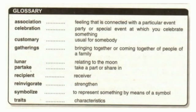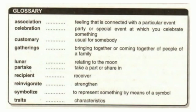Glossary meanings: association — feelings connected with a particular event; celebration — jashan, a special event at which you celebrate something; customary — mamool, riwaj, usual for somebody; gatherings — bringing together or coming together of people or a family; lunar — kumri, relating to the moon; recipient — receiver party; re-invigorate — takhtar banana, to strengthen; symbolize — alamda ka taur par, to present something by means of symbol; traits — characteristics, merits.